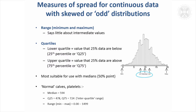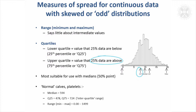But if your distribution is really quite odd, one way to measure the spread of the distribution is using something called quartiles. There are two quartiles. The lower one is the value that 25% of the data are below — this would be the first quartile here. And there's an upper quartile, which is the value that 25% of the data are above. So here they're labelled Q1 and Q3.